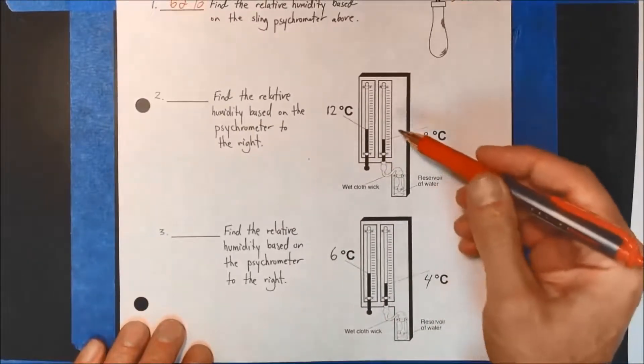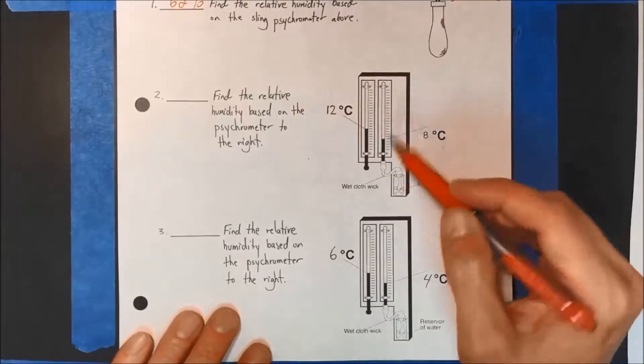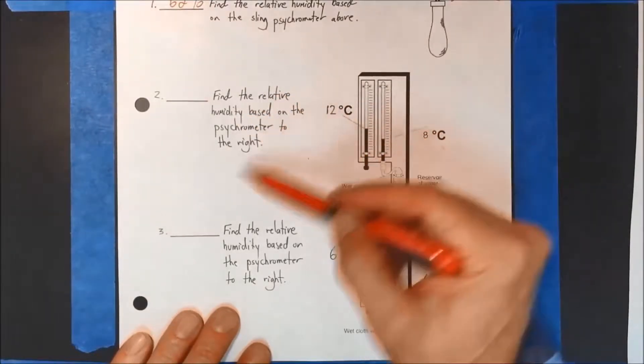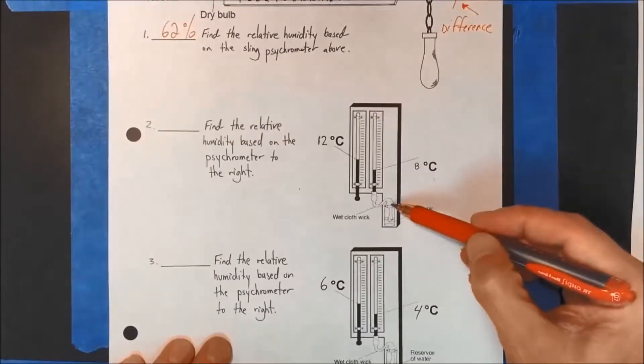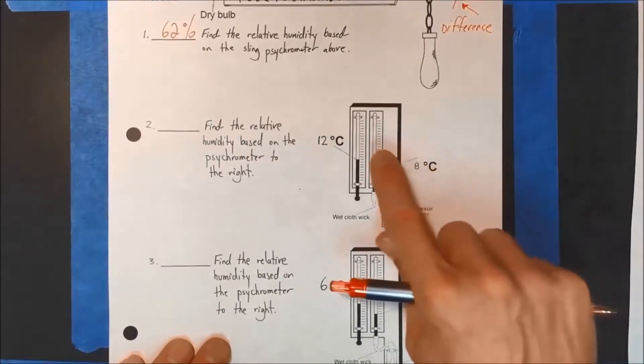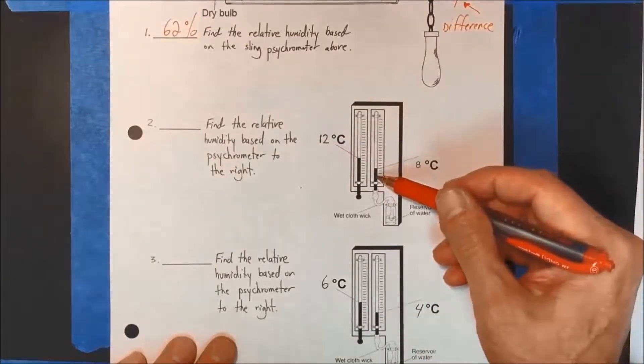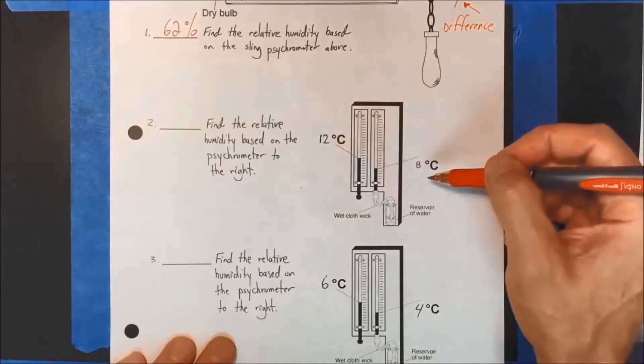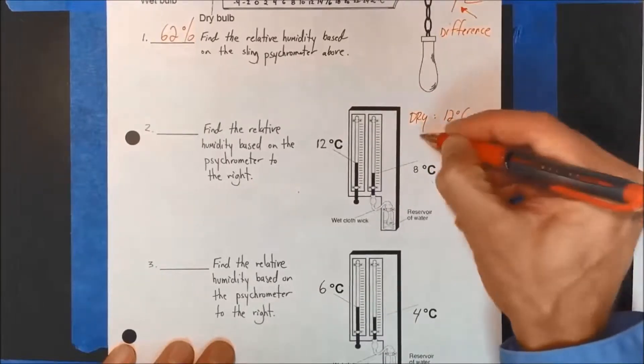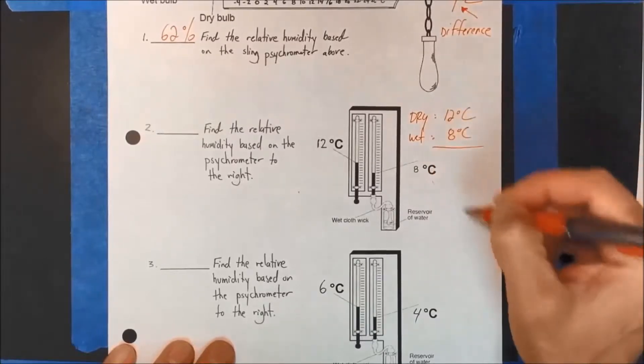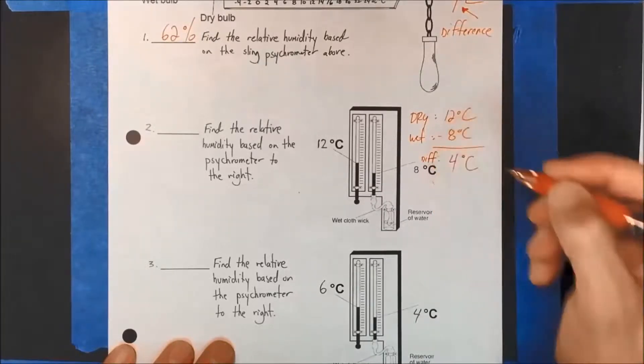Here we go. Second one. Here we have, this is just a sling psychrometer, it's a regular psychrometer in that it doesn't move around. But if you hang it on the wall, it will still work the same way. Find the relative humidity based on the psychrometer to the right. You can see it says wet cloth wick. You need to be able to deduce that this is your wet bulb. This is your dry bulb. The wet bulb can never be higher than the dry bulb. Can't happen because evaporation is a cooling process and takes heat away from the wet bulb thermometer. So here I have 12 for dry bulb, 8 for the wet bulb. Dry bulb is 12C, wet bulb is 8C. Calculated difference, which will be subtraction in this case, 4 degrees C is the difference.